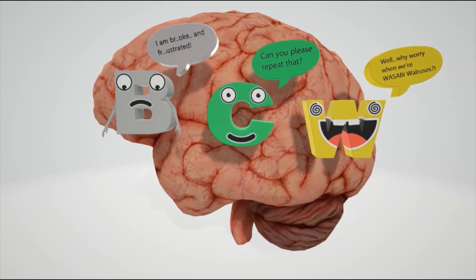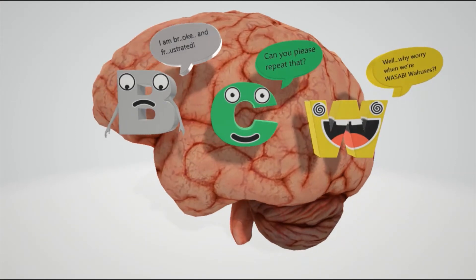Then we come to conduction aphasia, which can be caused by damage to the arcuate fasciculus—the bundles of fibers connecting Wernicke's area and Broca's area.